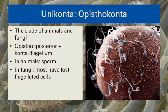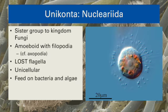Now we move into the Opisthokonta, which is our clade, along with fungi and a few protists. The name Opisthokonta means posterior-facing flagellum — a synapomorphy found in animals and some fungi, but lost in many groups. On the right here is probably the most familiar flagellated cell in all of biology: sperm.